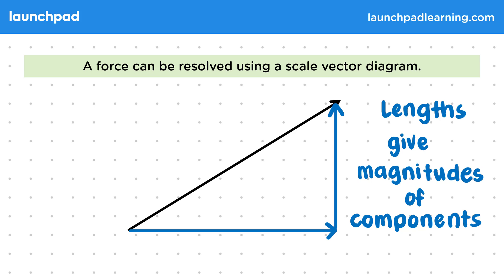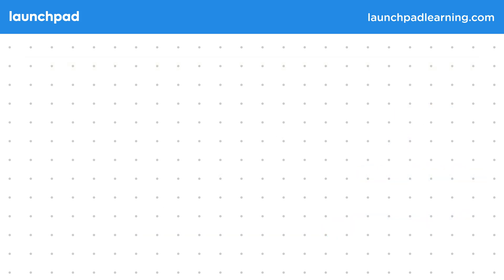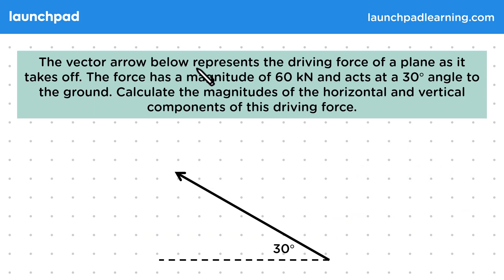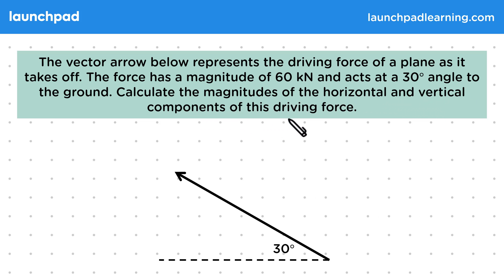You don't need to know the mathematical methods of resolving forces for your GCSE exams, but let's have a look at an example. The vector arrow below represents the driving force of a plane as it takes off. The force has a magnitude of 60 kN and acts at a 30 degree angle to the ground. Calculate the magnitudes of the horizontal and vertical components of this driving force.